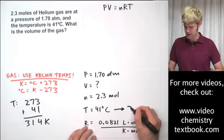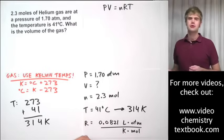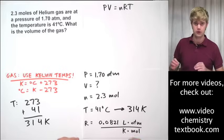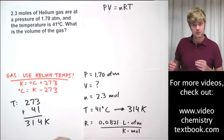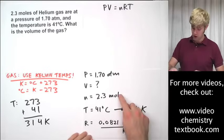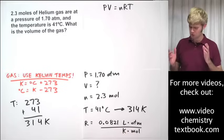So temperature will be 273 plus 41. So we're going to end up with 314 Kelvin. Now is a good time to look at these variables up here and compare their units with the units on R. We want them to be the same. Okay. So ATMs up here, ATMs down here. That's good. Moles here. Moles there. Kelvin there. Kelvin there. All right.